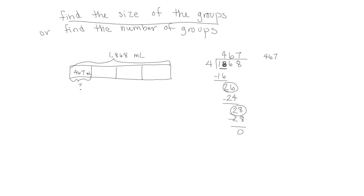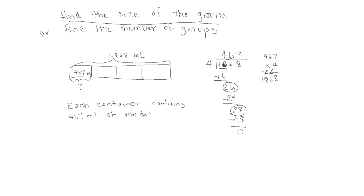Based on this, one container would contain 467 milliliters of medicine. We check by multiplication: 7×4=28, 6×4=24 plus 2 is 26, 4×4=16 plus 2 is 18. Our answer checks. Each container contains 467 milliliters of medicine. This is an example of the first problem type: finding the size of the groups.